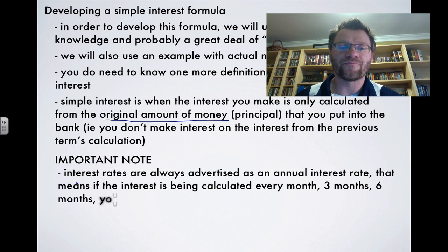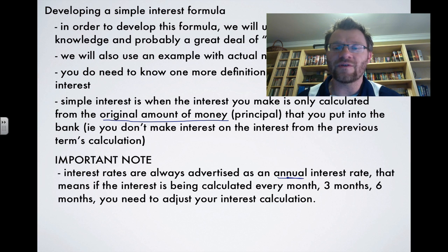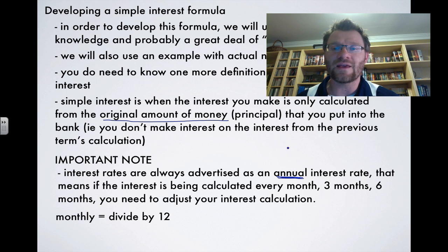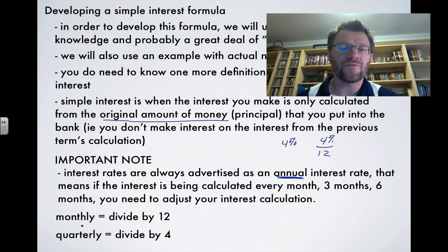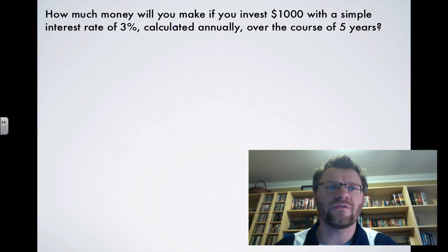So an important note. Interest rates are always advertised as annual. I've already said that once, but it's a really key point. That means if the interest is being calculated every month, every three months or every six months, you need to adjust your interest calculation. So if you're talking about a monthly interest, you have to divide your interest rate by 12. So say you're getting like 4% interest on your money. Then every time they calculate it at the end of each month, you're not actually getting 4% at the end of each month. You're getting 4% divided by 12. If we're talking about quarterly, then you would divide that number by 4. And if you're talking about it happening semi-annually, then you would divide that number by 2.